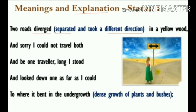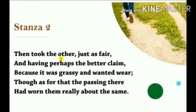Now he had to make a choice between the two. Though he wanted to travel both roads, it was not possible, so he stood there in dilemma for a long time and could not decide which path to take. Here the road represents choice and the undergrowth represents that unknown world — a state of confusion or dilemma when we have to choose one way out of two or many.